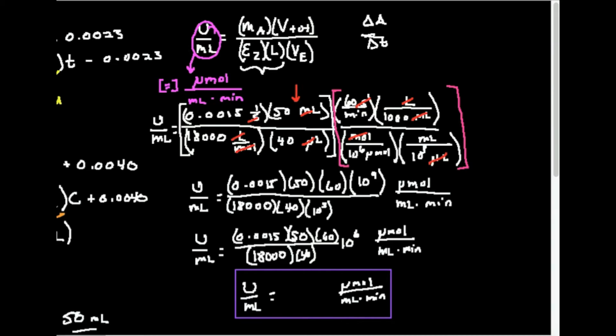You'll have to just give me a minute on this. So 0.0015 times 50 times 60 times, let's do 10 to the 6th, divided by 1,800, divided by 40. So I'm actually getting, this is actually 6.25 u per ml. That is the u per ml on this. 6.25 micromoles per mil per minute. All right, we're just going to go on and assume that number is right. But that's how you go about doing that.